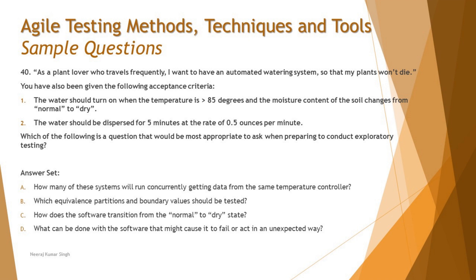Option A asks: how many of these systems will run concurrently, getting data from the same temperature controller? Option B asks: which equivalence partition and boundary values should be tested? Option C asks: how does the software transition from normal to dry state? — though this is more of a sensor and soil condition matter, which aligns with state transition testing. Option D asks: what can be done with the software that might cause it to fail or act in an unexpected way?